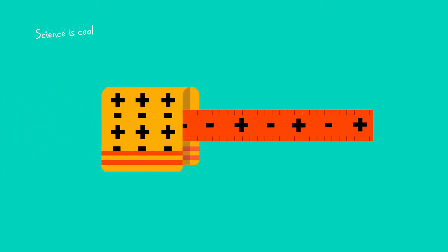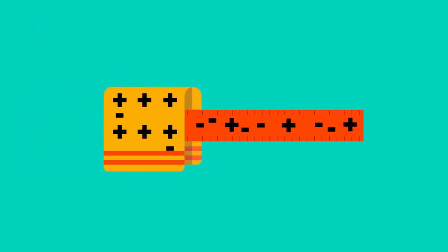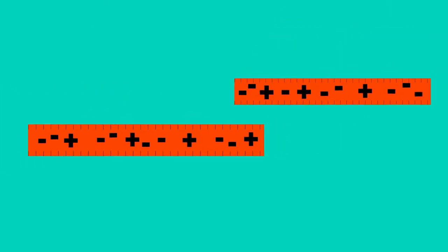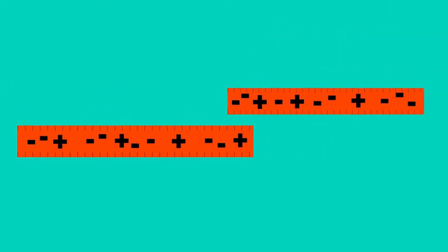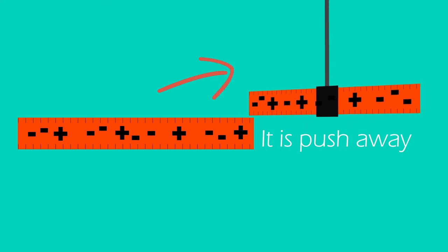This can be seen when a plastic rod, such as a ruler, is rubbed with a soft cloth. Electrons may be transferred from the cloth to the ruler. If two identical rulers are charged in this way, and one is suspended in a simple cradle as shown, as the end of one ruler is brought closer to the other, repulsion is seen as the suspended ruler turns, it is pushed away.